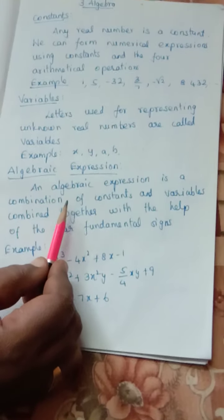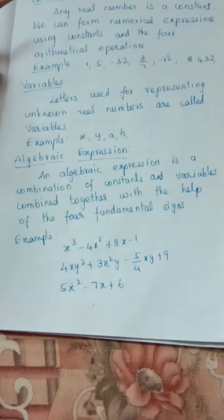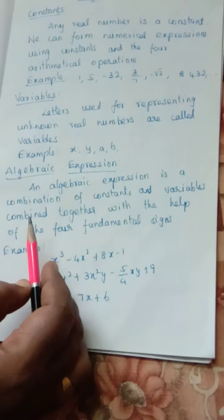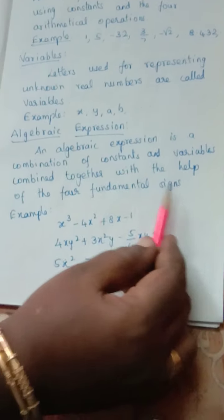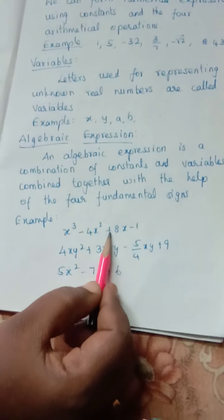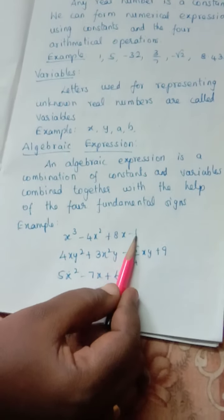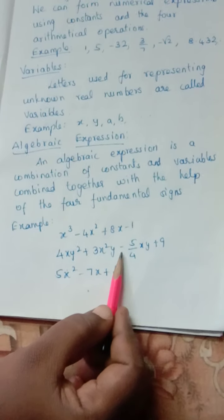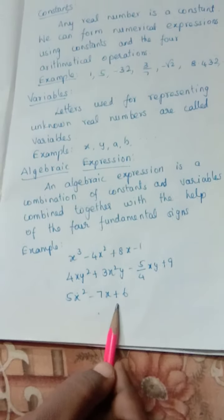Next, algebraic expression. An algebraic expression is a combination of constants and variables. If we combine these two with the help of four fundamental signs, we get an algebraic expression. For example: x³ minus 4x² plus 8x minus 1; 4xy² plus 3x²y minus 5 by 4xy plus 9; 5x² minus 7x plus 6.